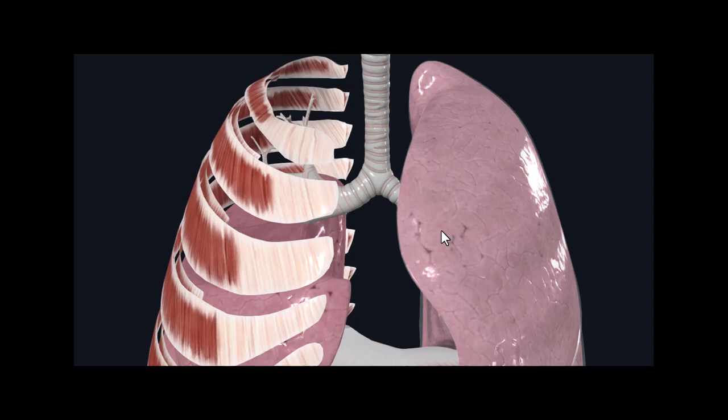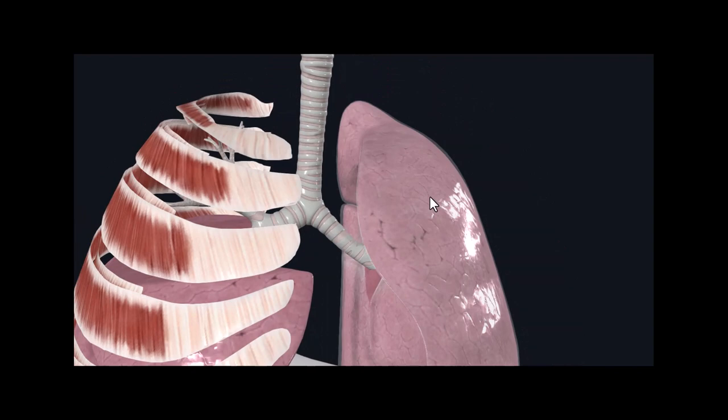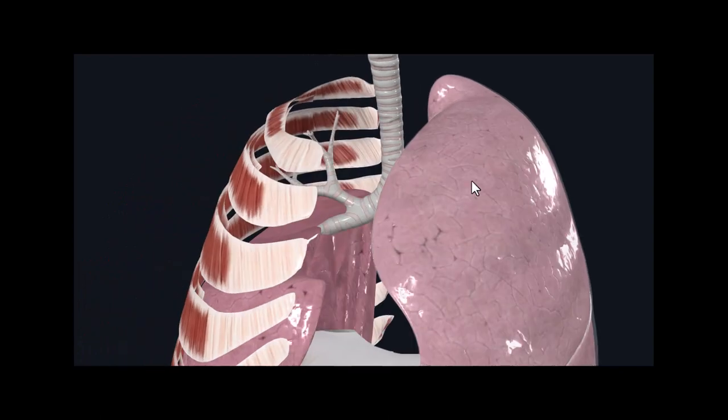Before moving on from the pleural membranes, the pleural fluid — the fluid between the pleural membranes — is created by the mesothelial cells. It is the same type of cell within the pericardium or the pericardial cavity that creates this fluid. Periodically, this fluid is recycled — it's like changing the oil out of your car. The mesothelial cells monitor the levels of the pleural cavity fluid and create more fluid.